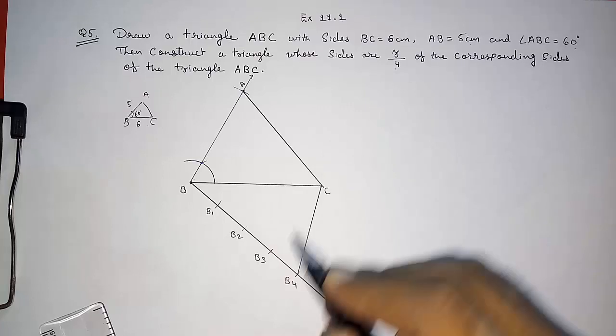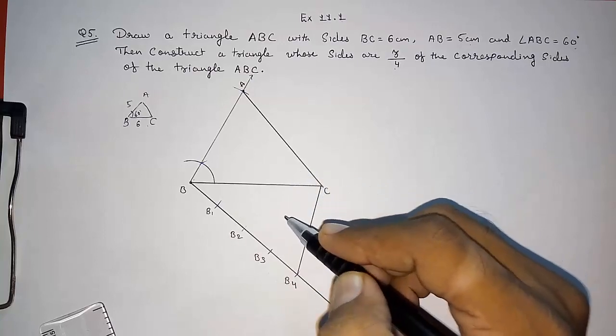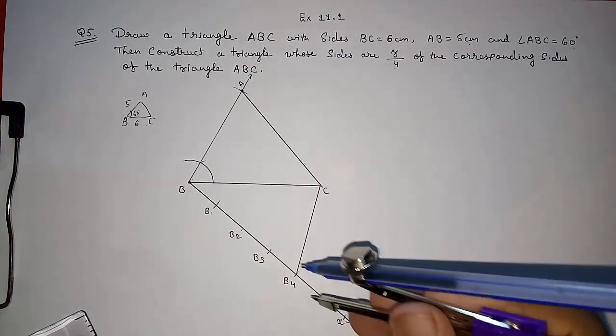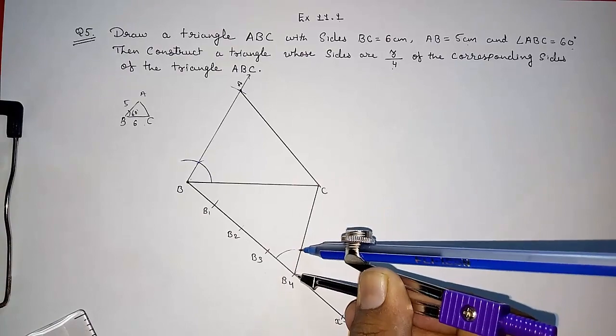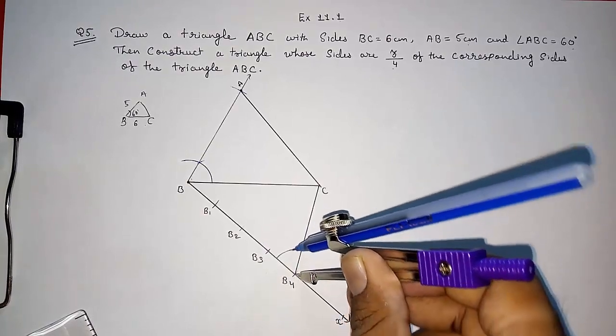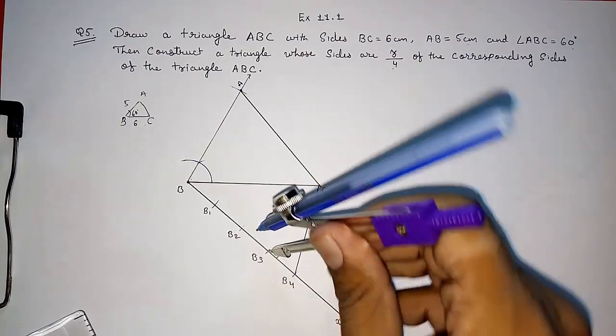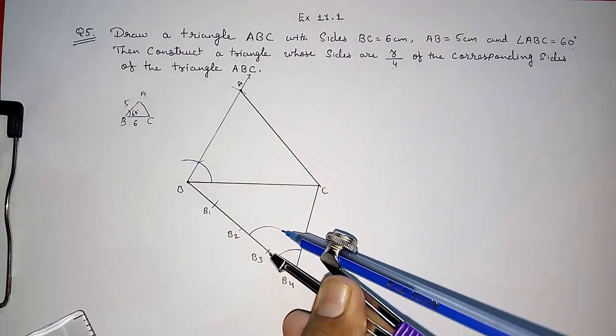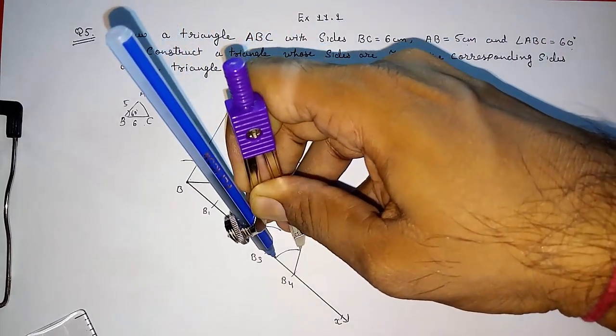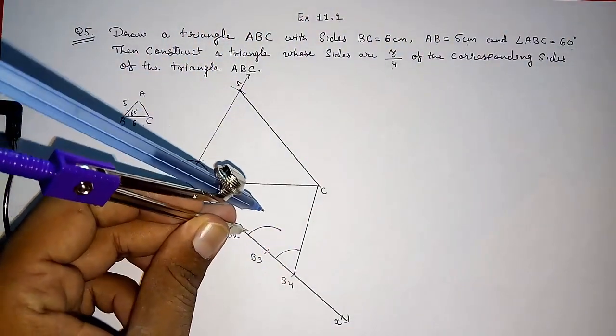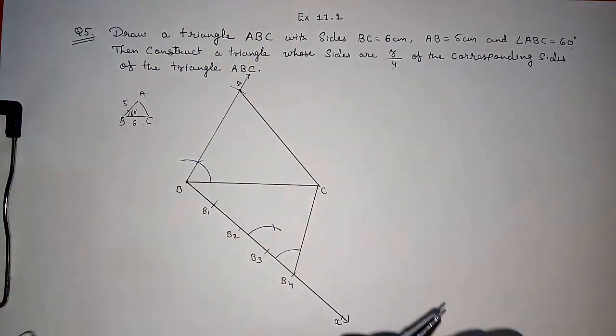Now we want a triangle that is 3 parts. So from here from the third part we have to draw a line intersecting this BC, but that line should be parallel to this line. So for constructing parallel line we need corresponding angle should be equal. So look here I am drawing an arc from B4. With the same measurement you have to draw an arc from B3. Now I have to measure the starting and the ending point of this. And that I have to cut on this. So now I am going to join it.